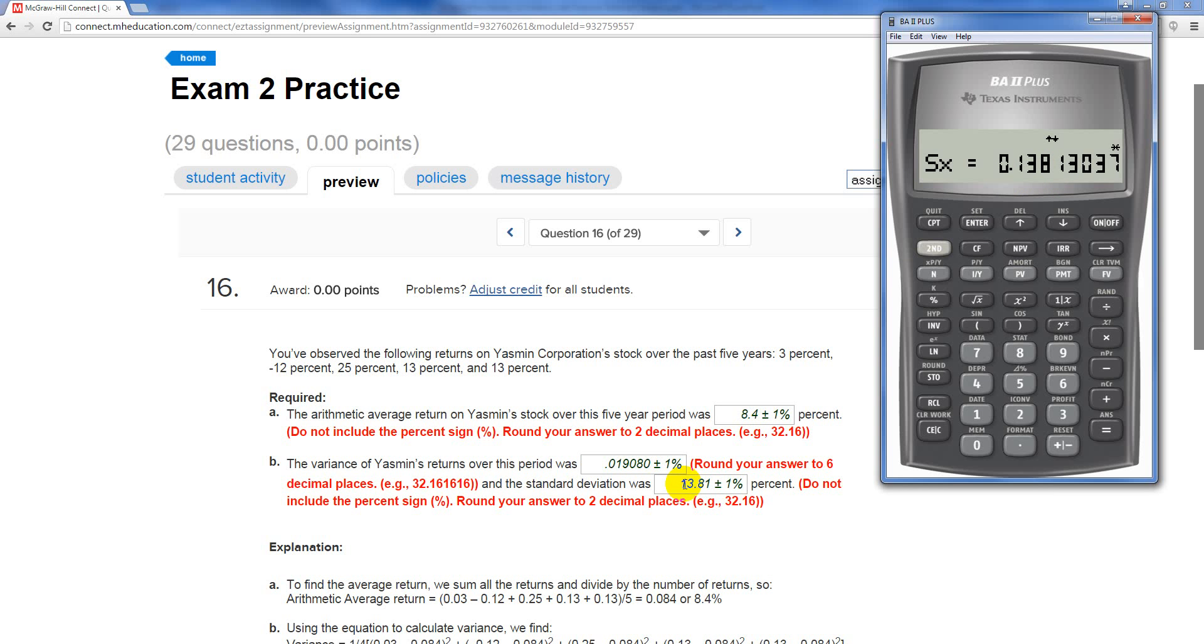But before I square this, I want to point something out. This equal sign lets you know that this number is what the calculator has found for this variable. As soon as I do something to that number, though, that equal sign disappears to let you know that this is not the sample standard deviation.